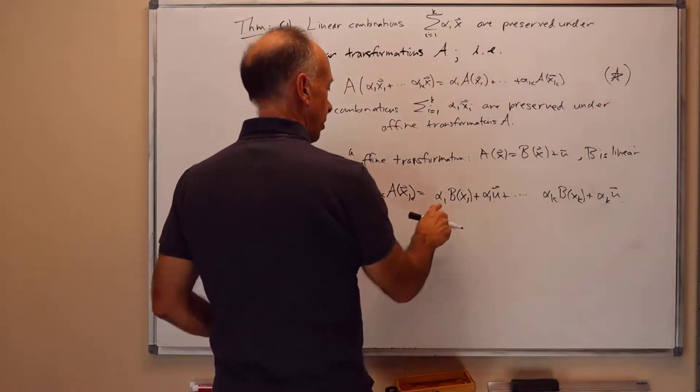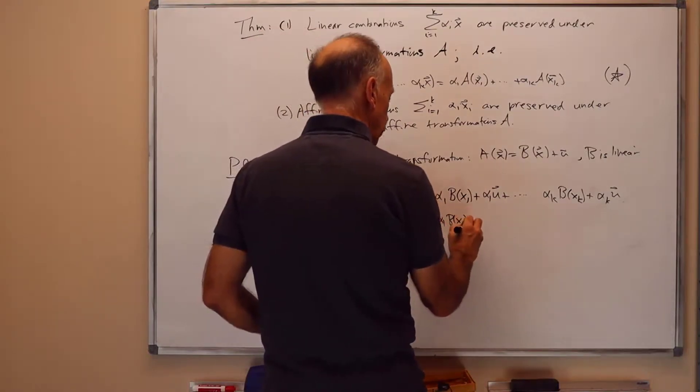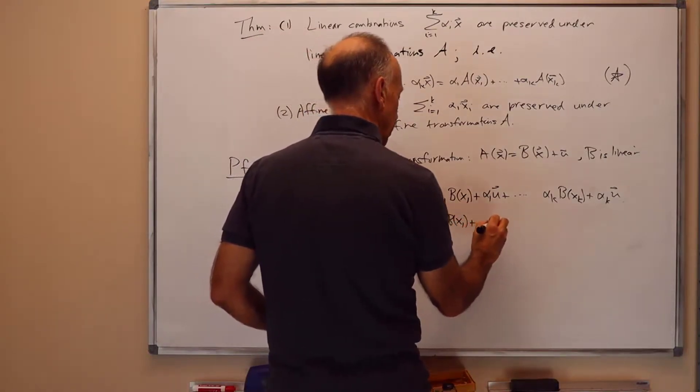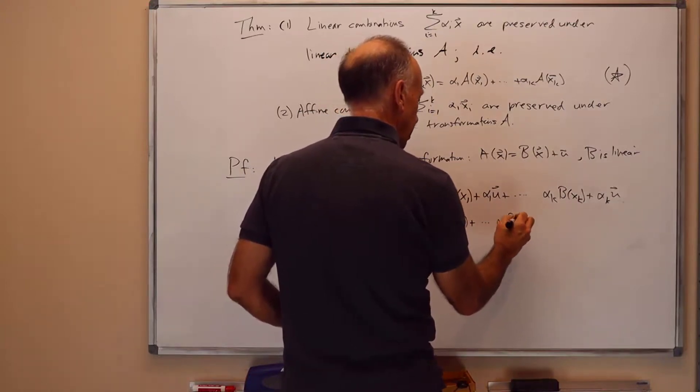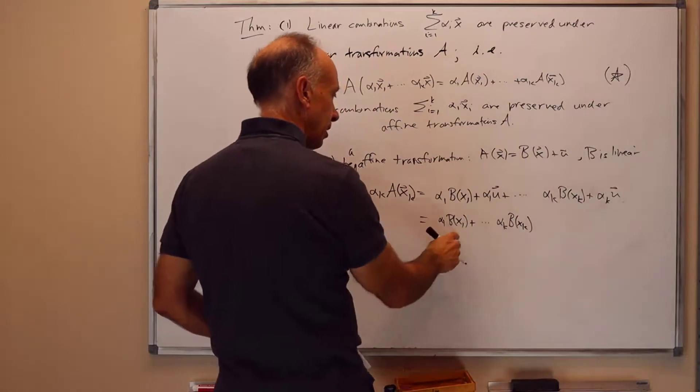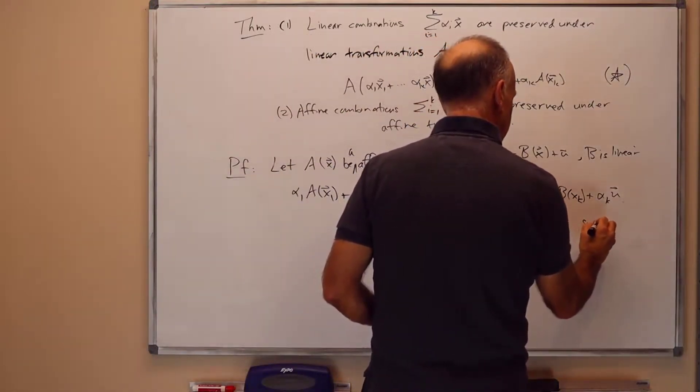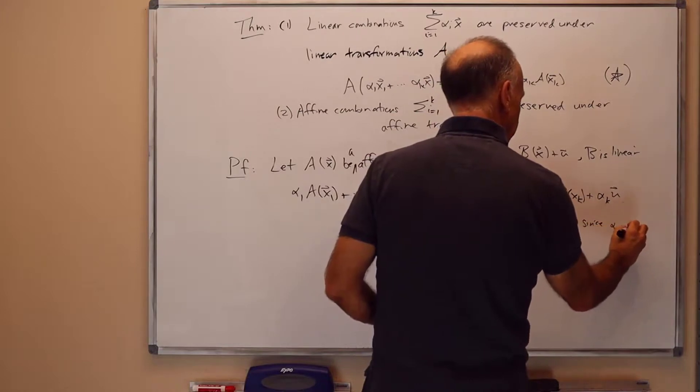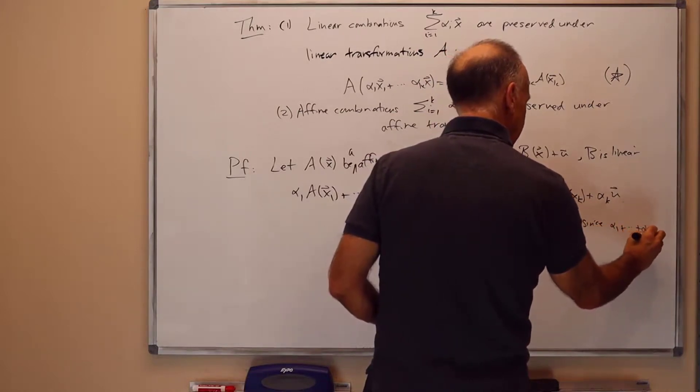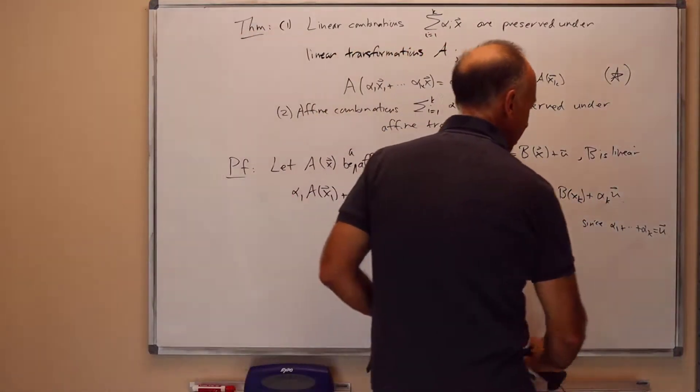So regrouping a little bit, that's alpha 1 B of x1 plus dot dot dot alpha k B of xk, plus u, and this is since alpha 1 plus dot dot dot alpha k equals 1.